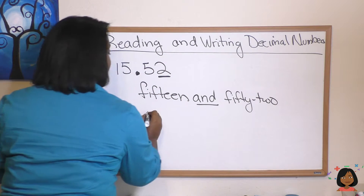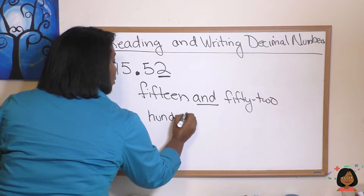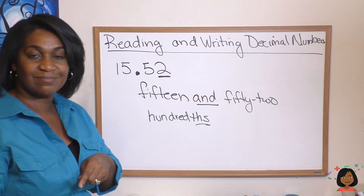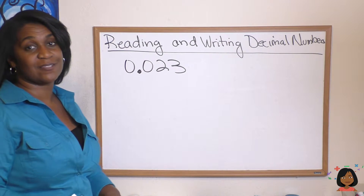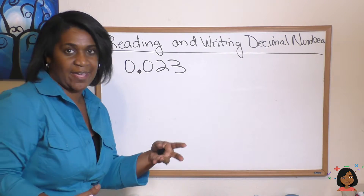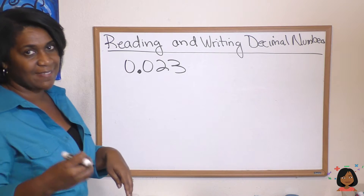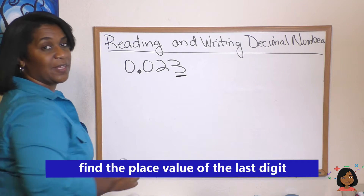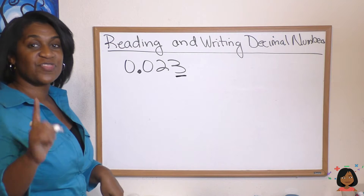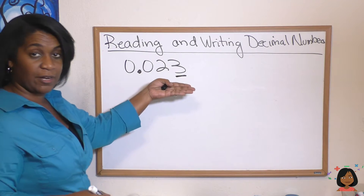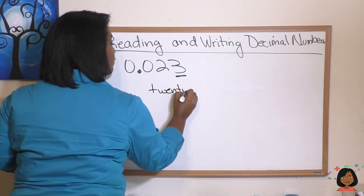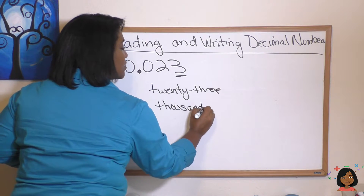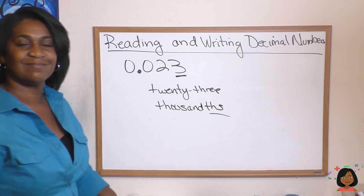Our normal rules apply — we're going to hyphenate fifty-two and write hundredths with the 'd' and 'ths,' which signifies we're talking about a decimal. This next decimal doesn't have a whole number at the front, so we just give our number and make sure we have that 'ths' on the end of wherever we land. The three is in the thousandths place, so we read it as twenty-three thousandths — hyphenate 23 and add thousandths with the 'ths' on the end.